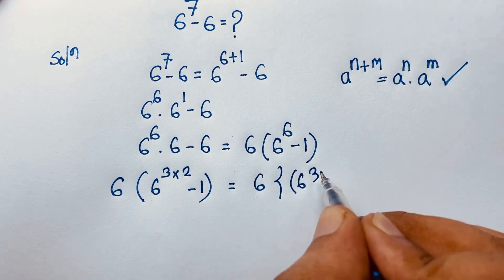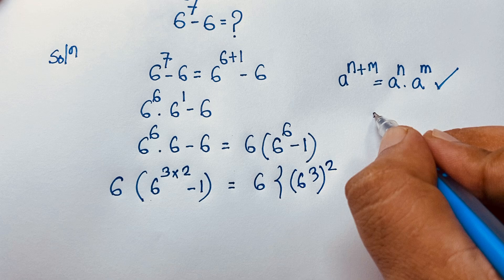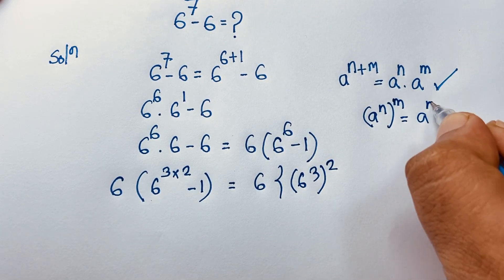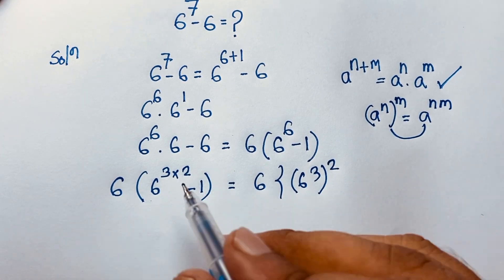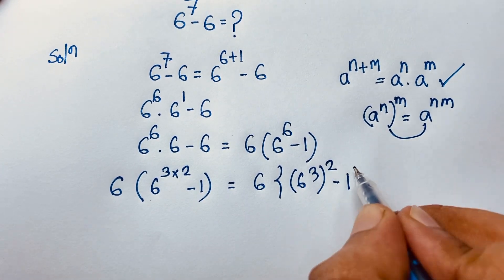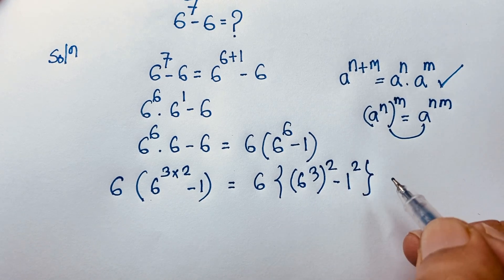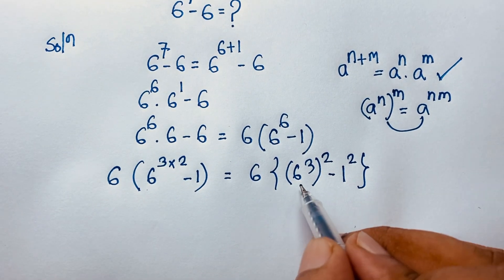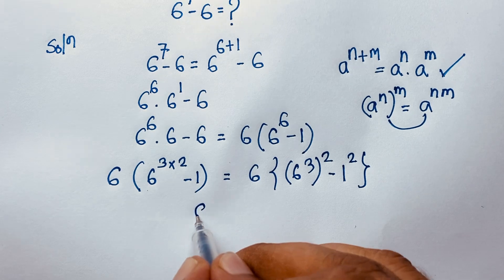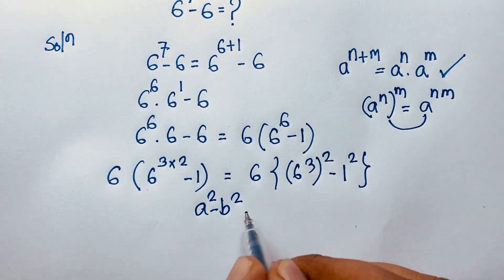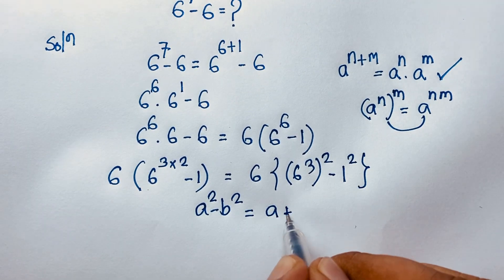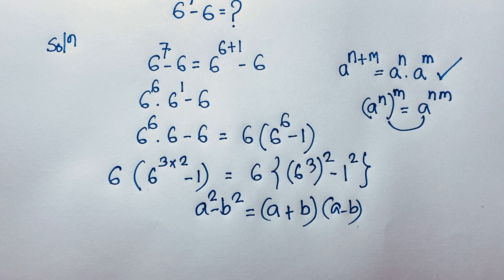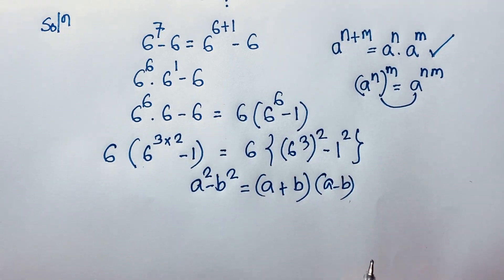We know that (a to the power n) whole to the power m equals a to the power nm. Applying this, we use the difference of squares formula: a squared minus b squared equals (a plus b)(a minus b). Here a is 6 to the power 3 and b is 1, since 1 to the power 2 equals 1.